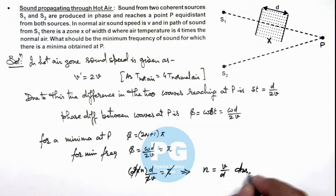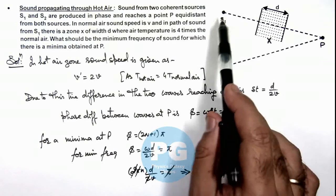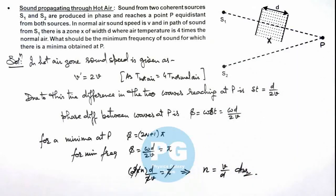That is the result of this problem. This is the minimum frequency of sound produced by the 2 sources for which a minima is produced at point P.